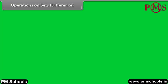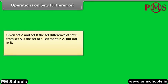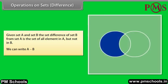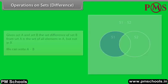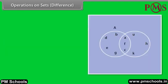Operations on sets — Difference. Given set A and set B, the set difference of set B from set A is the set of all elements in A but not in B. We can write A minus B. Look at this Venn diagram. This shows us the difference of the two sets S1 and S2.